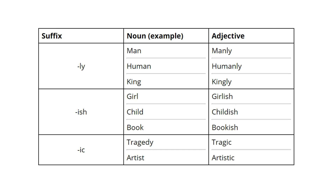The next suffixes are '-ly', '-ish', and '-ic'. Adding '-ly': man → manly, king → kingly. Adding '-ish': girl → girlish, child → childish, book → bookish. Adding '-ic': tragedy → tragic, artist → artistic. In the word 'tragedy', the word ends with '-y', so you remove the '-dy' and add the suffix '-ic'. There are no set rules — you need to be thorough with the patterns and know which word takes which suffix. Then it will be easy to change a noun to an adjective.